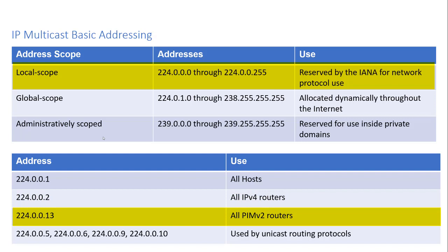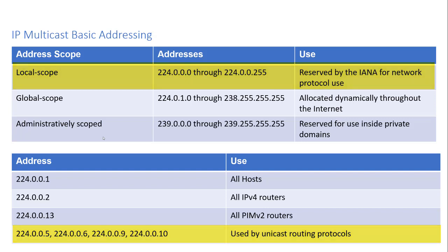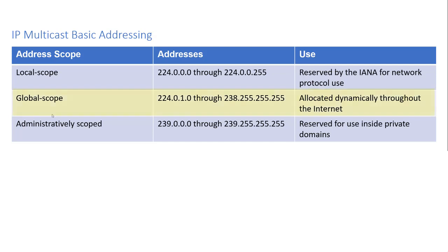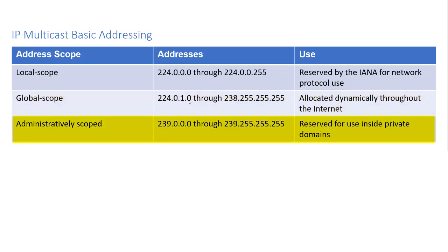PIM is a multicast mode used for multicast messaging. Addresses 224.0.0.5, .6, .9, and .10 are used by unicast routing protocols such as OSPF. In addition to that local scope, we also have a global scope starting at 224.0.1.0 through 238.255.255.255, which are allocated dynamically through the internet. And then inside private domains, we have 239.0.0.0 through 239.255.255.255.